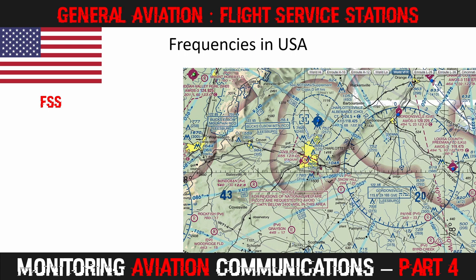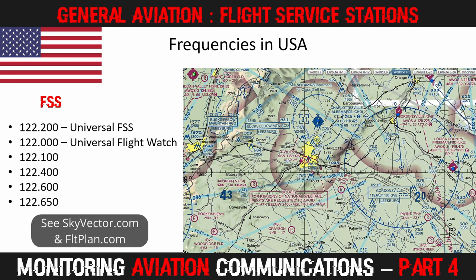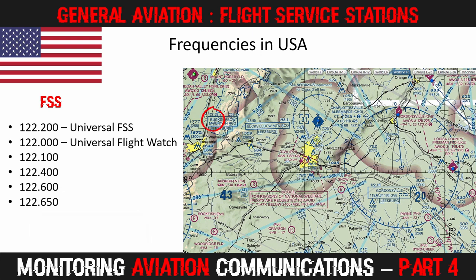Back in the US, you will also hear a lot of general aviation traffic on flight service station frequencies. The primary frequency used all over the US is 122.2 MHz. Since this frequency becomes quite congested, other channels have been established. 122.0 was used as a flight watch channel, primarily for weather reporting only, however it is being phased out. The other channels listed here are common FSS frequencies, but the most accurate information for your area will be found on your local charts, visible on skyvector.com or flightplan.com. You'll notice that on this chart, a frequency of 122.65 has been set for the Bucks Elbow Mountain area.